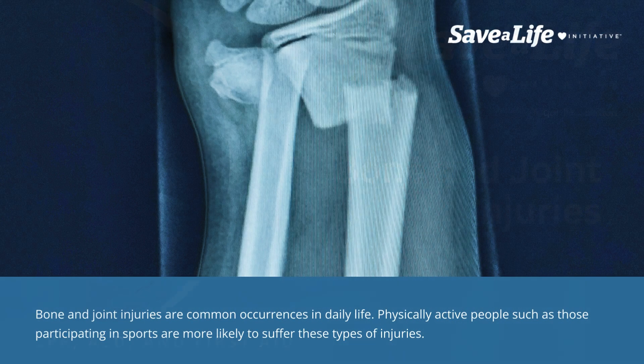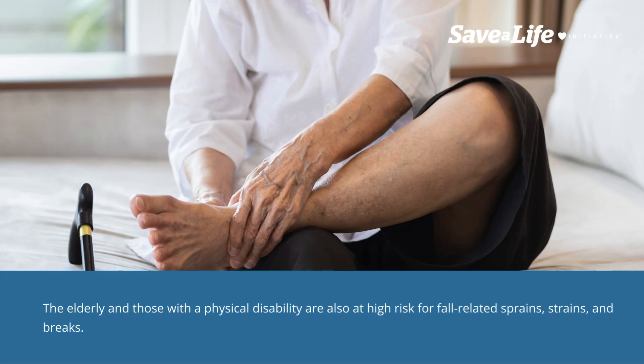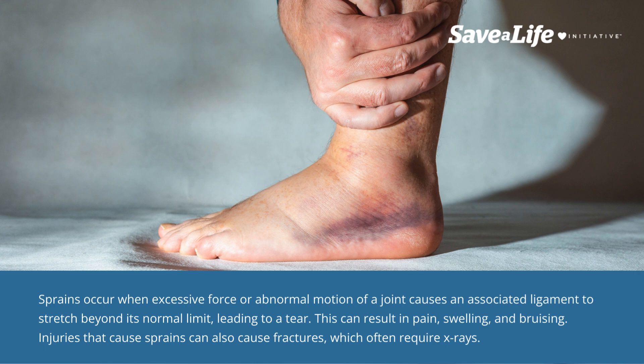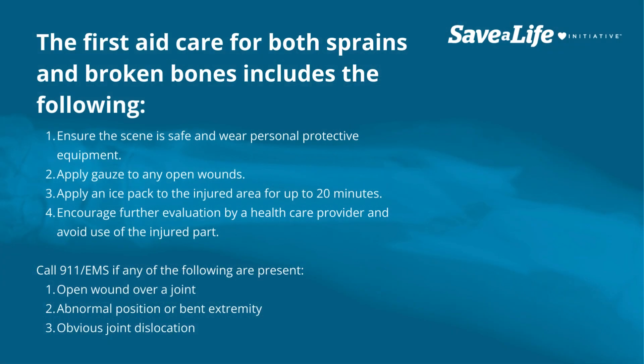Bone and joint injuries are common occurrences in daily life. Physically active people such as those participating in sports are more likely to suffer these types of injuries. The elderly and those with a physical disability are also at high risk for fall-related sprains, strains, and breaks. Sprains occur when excessive force or abnormal motion of a joint causes an associated ligament to stretch beyond its normal limit, leading to a tear. This can result in pain, swelling, and bruising. Injuries that cause sprains can also cause fractures, which often require x-rays.